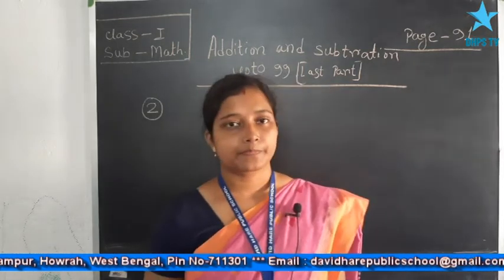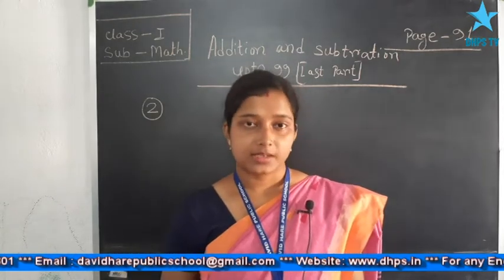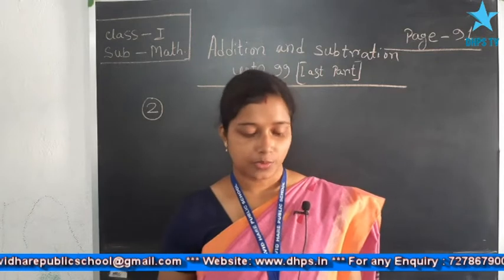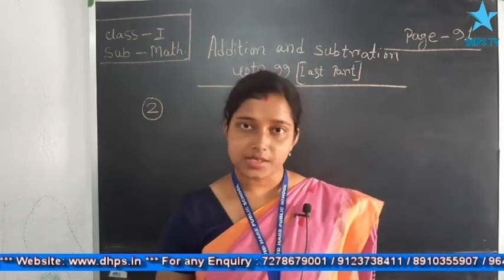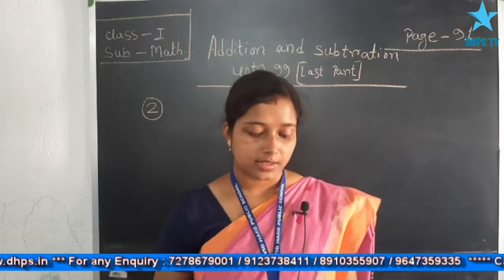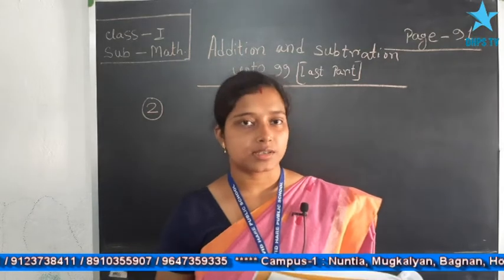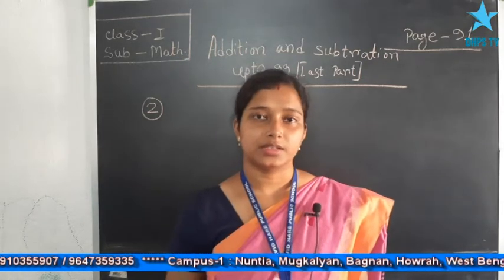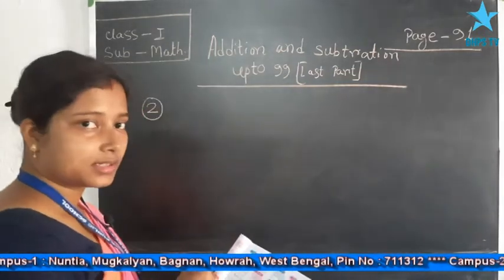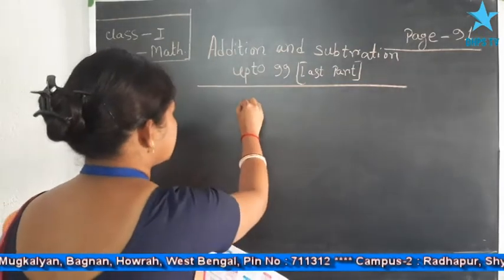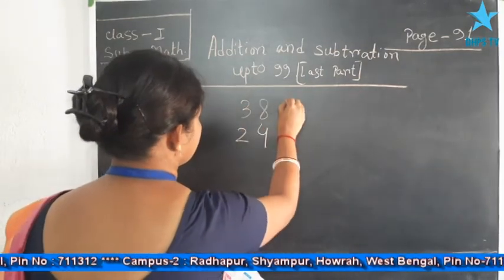When you can see here, the number of cows is decreasing compared to the previous number. In the previous case he had 38 cows, and now he sold 24 cows, so obviously the number will decrease. Now let us subtract the two numbers: 38 and 24.